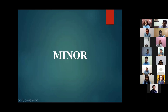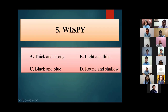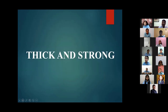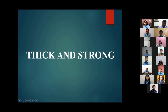Next word for Riyan Maan: 'Wispy'. Options are thick and strong, light and thin, black and blue, or round and shallow. He answers 'thick and strong' — correct, because wispy means light and feathery, so the opposite is thick and strong. Perfectly answered.